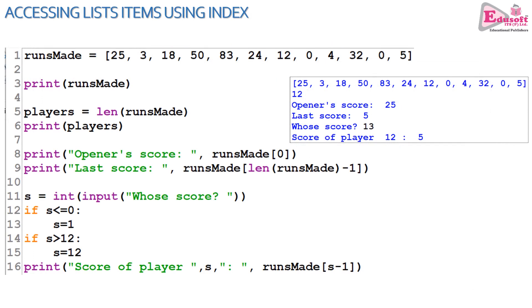Now let us see how we access list elements or items in the list based on their index. We learned earlier that index is zero-based. The list runsMade has values with index starting from zero to 11, marked there in red. In line five, we are using a built-in function in Python, the len function, which returns the length of a data structure. Here we are passing the name of the list, and len function returns 12.